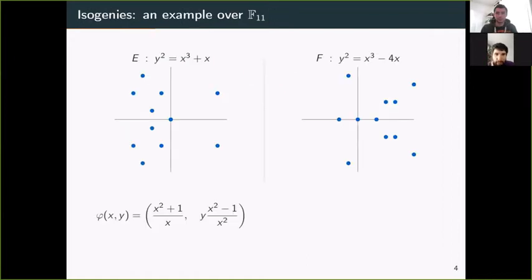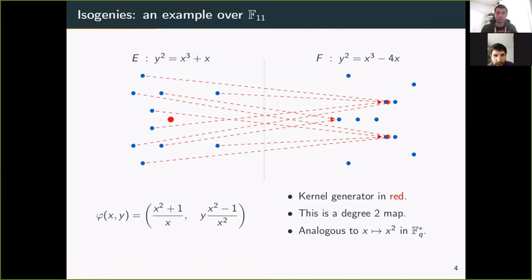Let me give a brief example over F₁₁. The first curve E is y² = x³ + x, and F is y² = x³ - 4x. The map φ goes from E to F and is an isogeny. The actual map is shown by red dotted lines. The kernel is generated by that red point and has cardinality two, consisting of that red point and the point of infinity. This is a degree two map, analogous to squaring in Fq*.